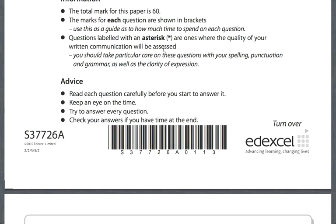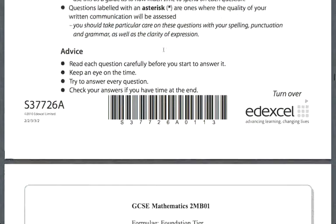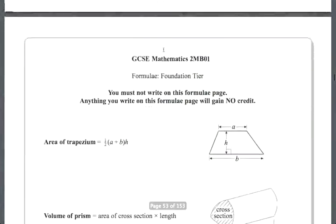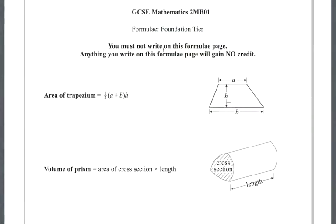There's a formula page here with two pieces of information which may or may not be used in the exam, but it's good to be aware they're there. The first is the area of a trapezium — if you see a question on a trapezium, look back at this. The second is the volume of a prism, with a picture of one. Again, if you have a question about volume of a prism, make sure you look back there.